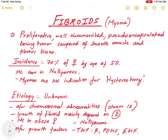Today we'll be focusing on the topic of fibroids, also called myomas. Fibroids are proliferative, well-circumscribed, pseudo-encapsulated benign tumors composed of smooth muscles and fibrous tissue. This is the most common type of tumor of the uterus.